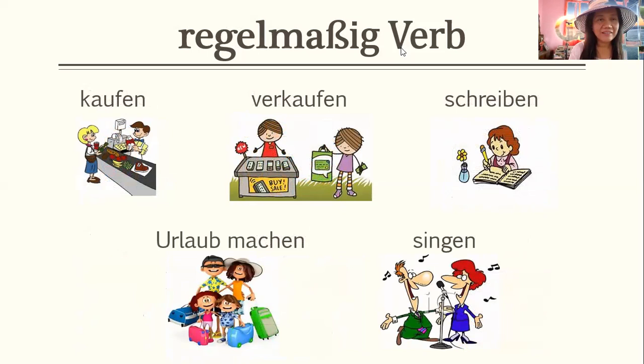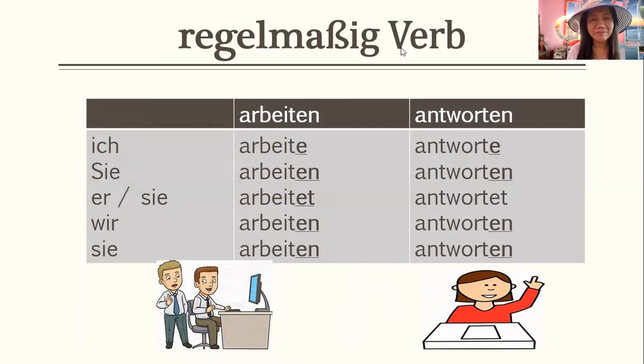Kaufen auf Englisch bedeutet 'to buy.' Verkaufen means 'to sell' — the opposite of kaufen. We also have urlaub machen meaning 'to take a vacation,' or reisen, and singen means 'to sing.'